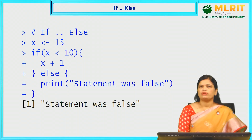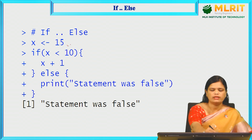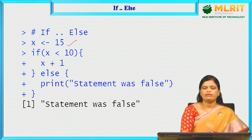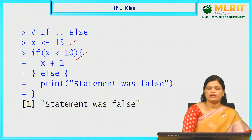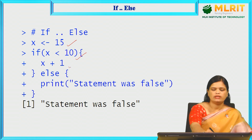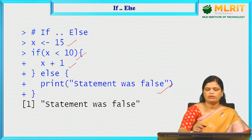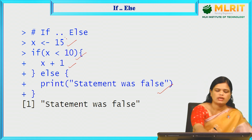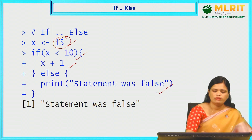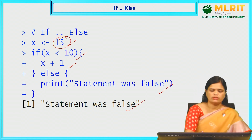First, we are going to discuss the if-else statement. In this example, we are assigning x value to 15 and we are checking if x is less than 10, and we are incrementing the x value, or else we are printing it as 'statement was false'. As the x is assigned to 15, we will be getting the output as 'statement was false'.